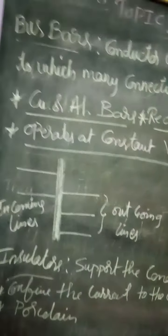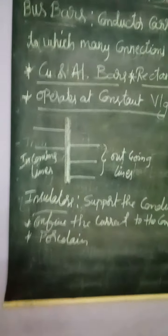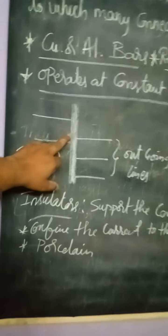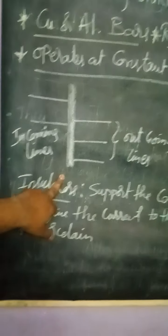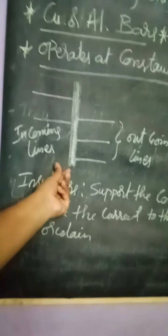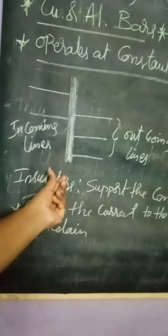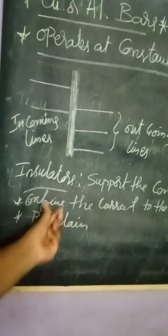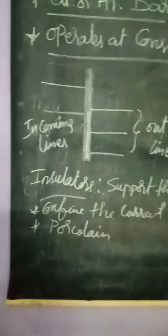Bus bars are used in substations — all incoming and outgoing lines are connected to the bus bars. Next, let's talk about the insulator. The insulator provides support to the conductor. All bus bars are placed on an insulator so that they do not come in contact with the earth.